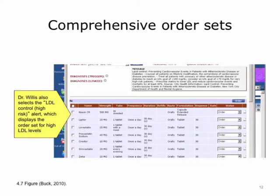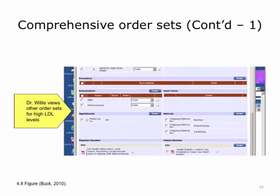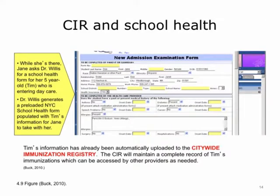Dr. Willis may also choose to use additional order sets that can be linked to do a complete follow-up for a patient with a particular condition. These order sets have all the right information in one place, including medications, lab tests, procedures, immunizations, patient education material, and so on. Since Jane is there, she also asks her doctor for a school health form for her five-year-old Tim who is entering daycare. Dr. Willis is able to print a preloaded New York City school health form from the screen.